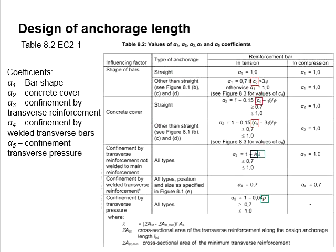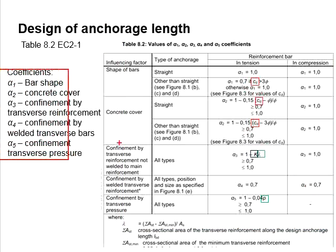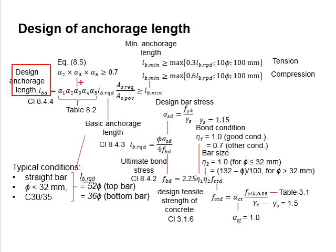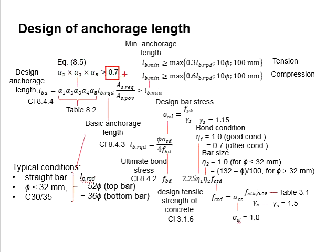By observing the conditions of the anchorage bar and referring to table 8.2, the coefficients alpha 1 to alpha 5 are determined. These coefficients are then substituted into the equation to determine the design anchorage length. The actual anchorage length provided must be longer than the calculated design anchorage length. It is also noted that the product of alpha 2, alpha 3, and alpha 5 must be at least equal to 0.7.